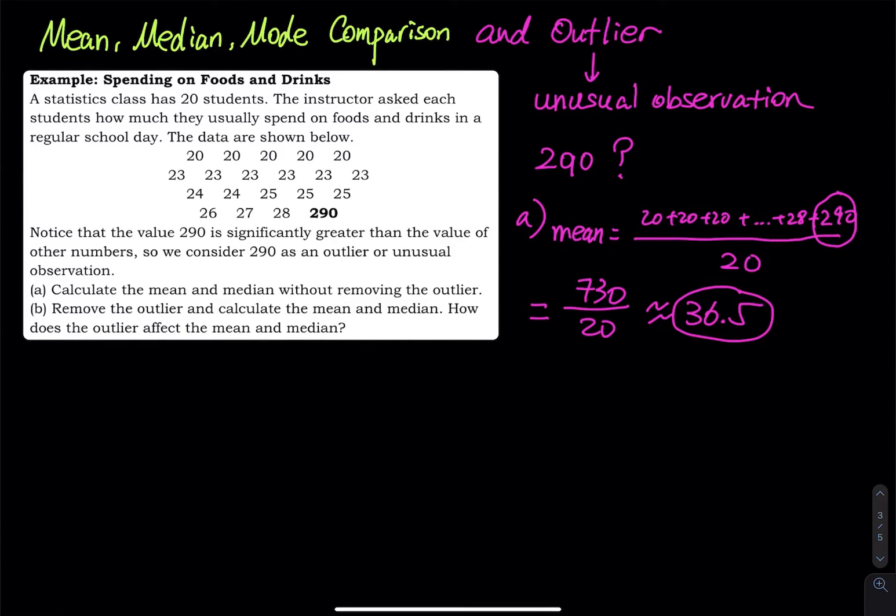There's no way to say that on average they spend 36. No one is spending more than 30. Why do you still say they're spending around 36.50? That doesn't look right because there is an unusual observation, the 290.